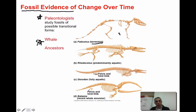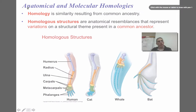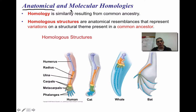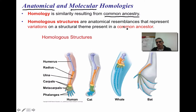Another piece of evidence is anatomical or molecular homologies. The word homology basically means similarity resulting from common ancestry. When we look at homologous structures, there are anatomical resemblances representing variations on a structural theme present in the common ancestor. We're making a comparison between a human, a cat, a whale, and a bat, looking at the appendage for each of these four animals.